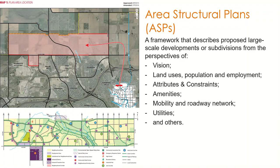Moving on to Area Structural Plans, which are a very similar form of study, however at a much smaller scale or scope. These typically happen for developers or developments within a large land area, such as subdivisions. The study looks into the subdivision's vision, land uses, population and employment, attributes and constraints such as green fields or protected areas, amenities, mobility and roadway network, as well as utilities and many others.